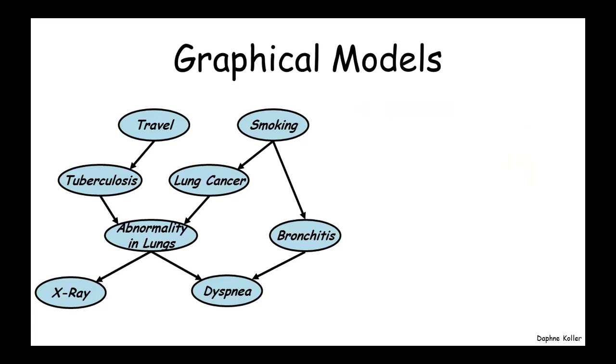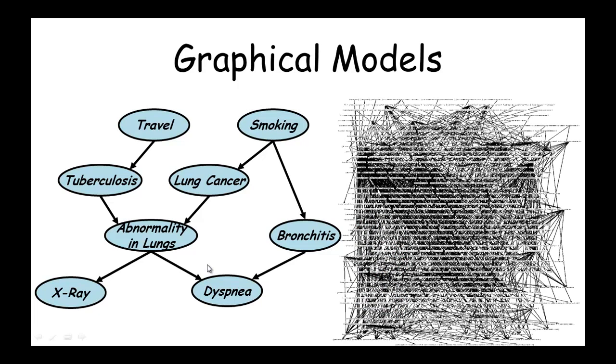So what does a graphical model look like? It takes all of these different things that we're uncertain about and tries to show how they relate to each other. So this, for example, is a baby model for medical diagnosis that includes things like predisposing factors, diseases, and test results and symptoms. Of course, a real graphical model doesn't look like that. It looks a lot more like this. Much more interesting.